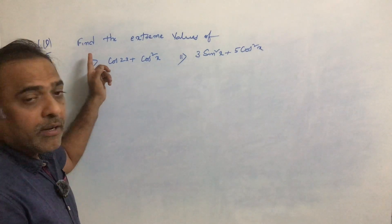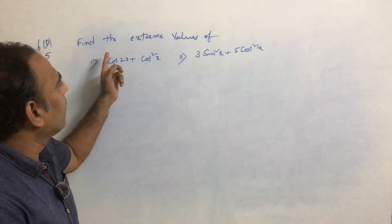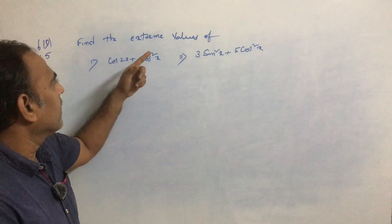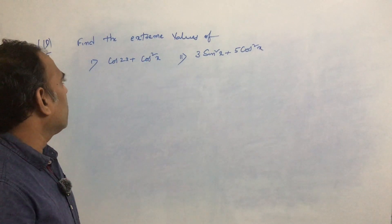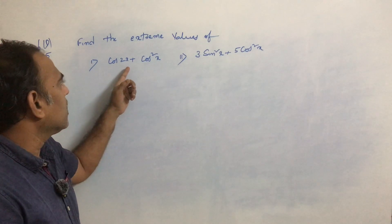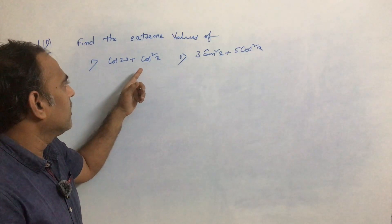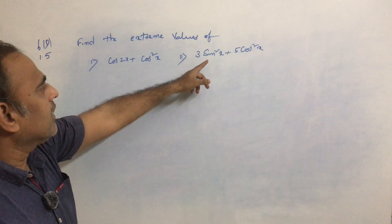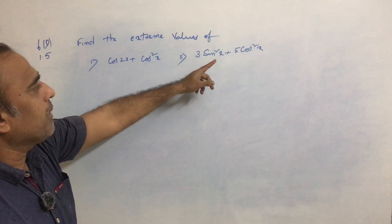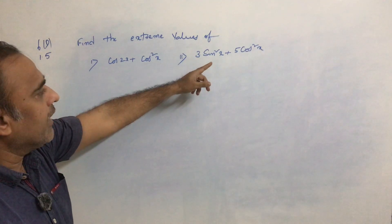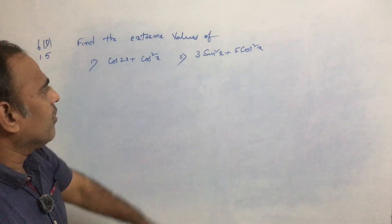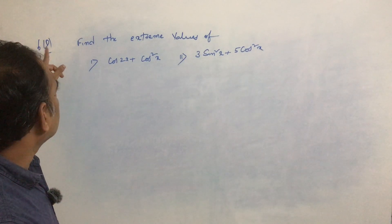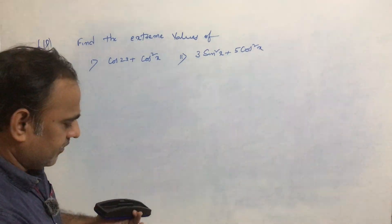The next problem is: find the extreme values of cos2x plus cos²x, and 3sin²x plus φcos²x. This is in exercise 6D, problem 1.5.